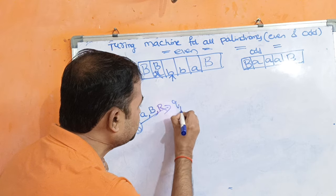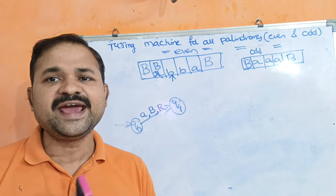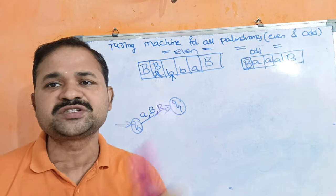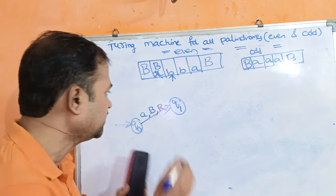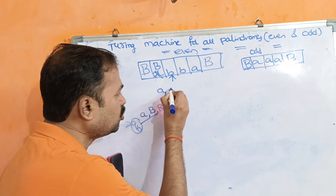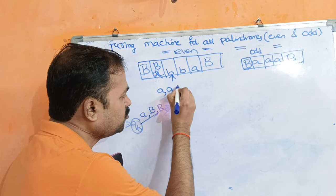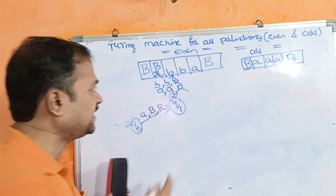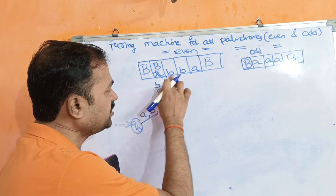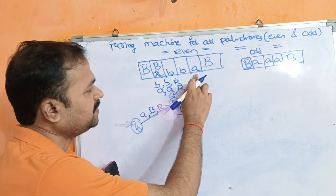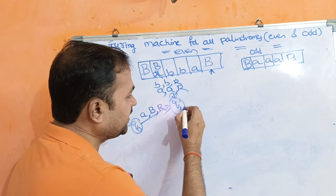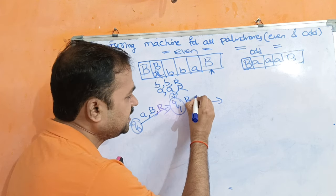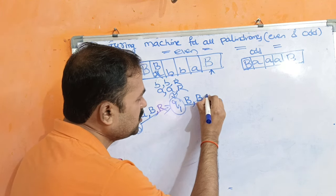Next we are at Q1 state. If we read A's and B's on Q1, don't change them but move the head towards the right until we get the blank symbol. So if we read A on Q1, keep it as A and move right. If we read B on Q1, keep it as B and move right.